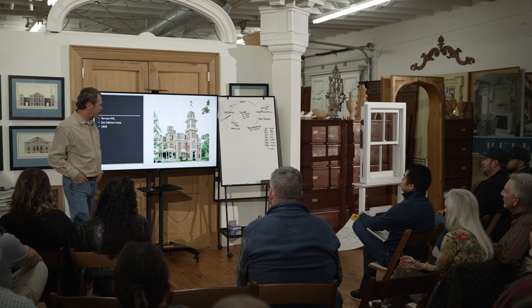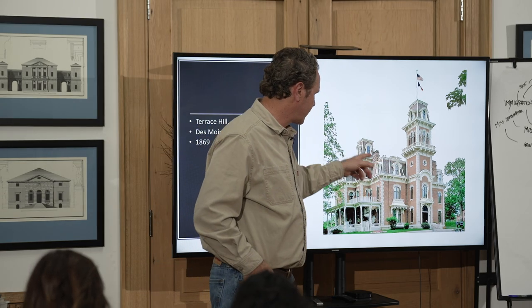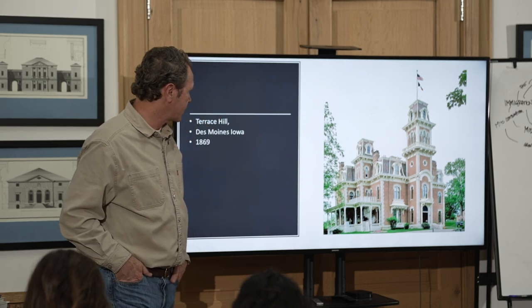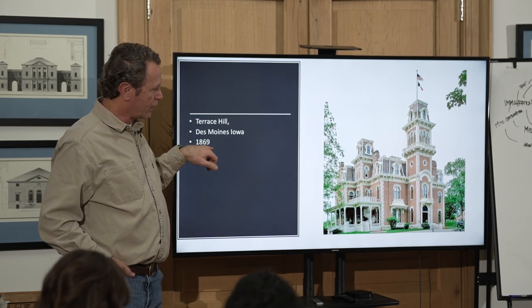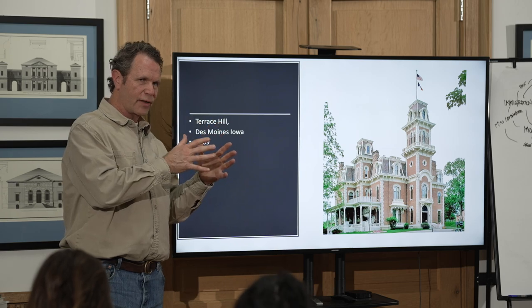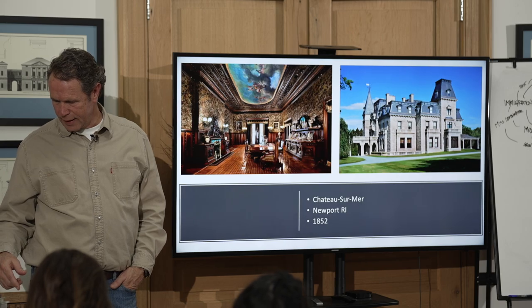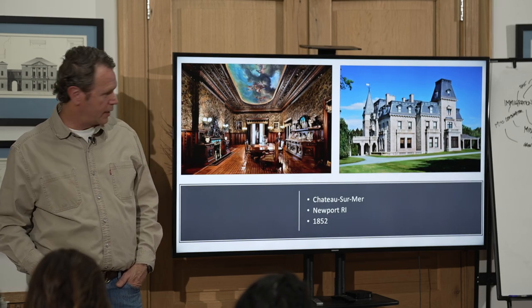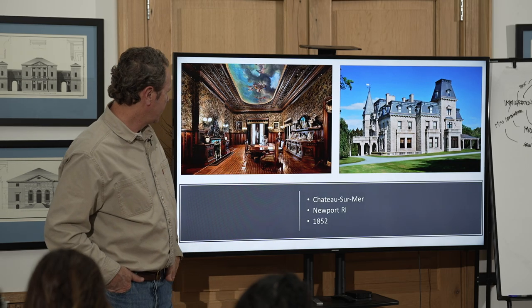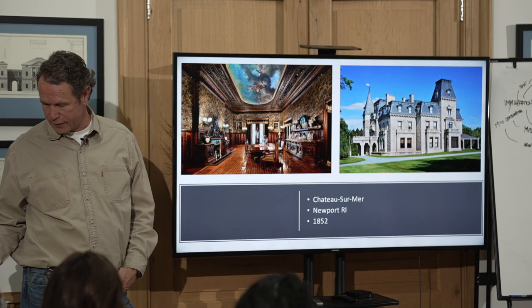Terrace Hill is a very famous Second Empire house. You see the tall tower, and the mansard roof running around the structure really defines it in that style — built in 1869, right at the edge of our time period. Gothic Revival and Italianate last pretty much through the period, while Second Empire doesn't start as early but lasts a little bit longer. This house in Newport has crazy interiors and details — a very expensive Second Empire house.